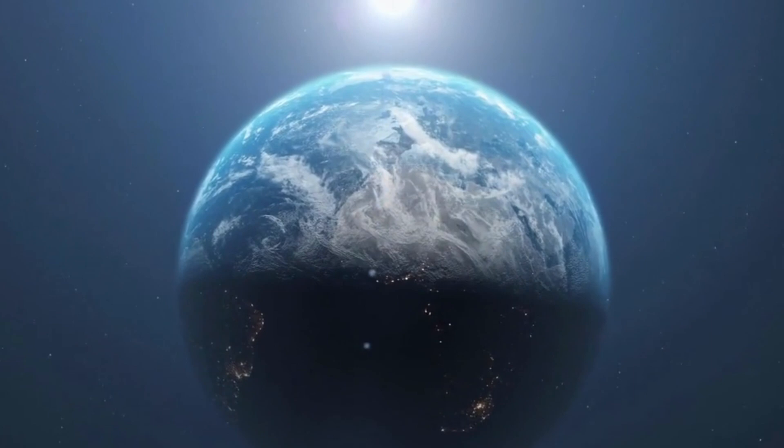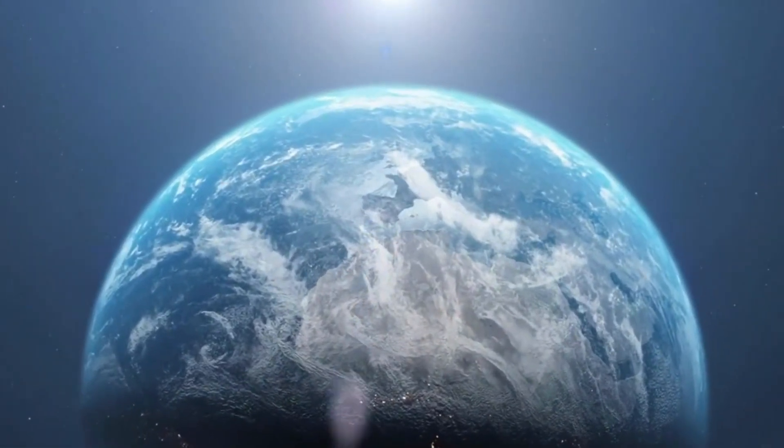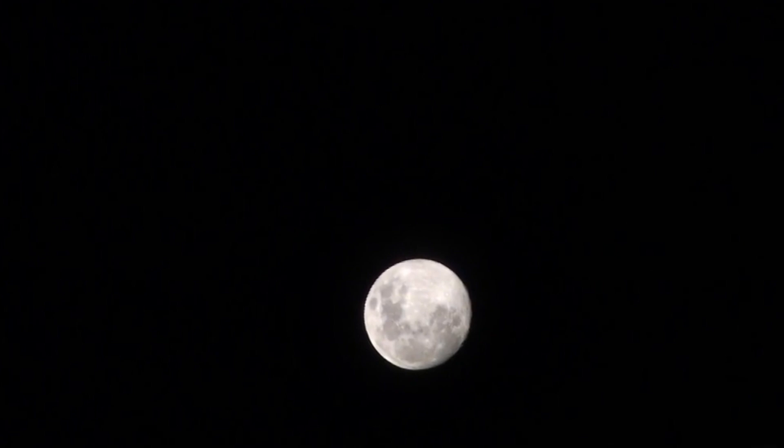Partial Lunar Eclipse. During a partial lunar eclipse, only a portion of the moon enters Earth's umbral shadow, creating a stunning contrast of light and shadow on its surface.